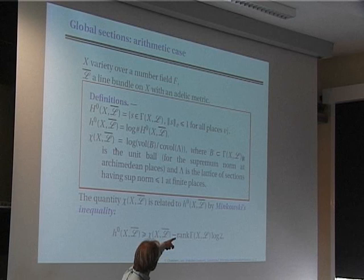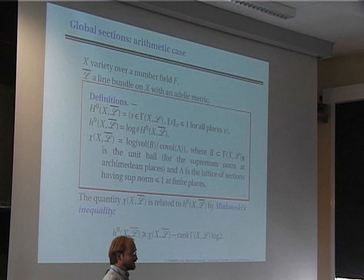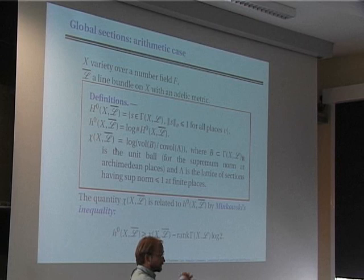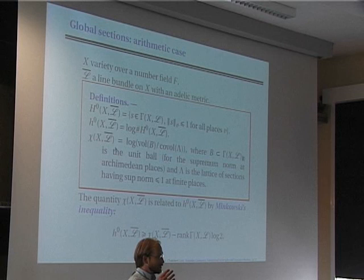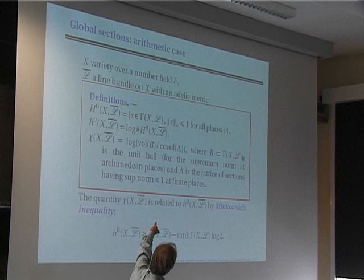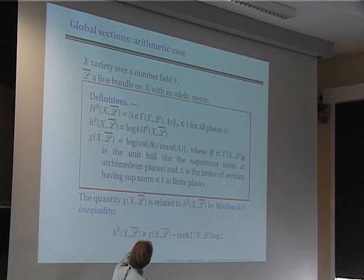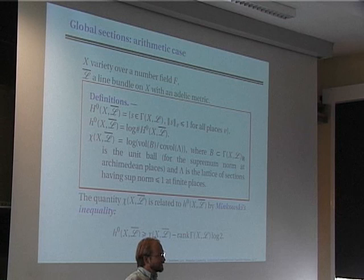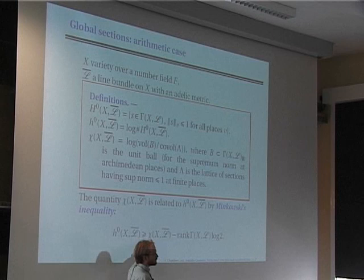Within this ℝ-vector space I have two objects of different nature. The first is the ball B at Archimedean places — the set of sections whose norms are smaller than one at all Archimedean places. The second is the lattice Λ — sections with sub-norms smaller than one at all finite places. The set I'm interested in is the intersection of these two: points of the lattice belonging to the given ball. Minkowski's theorem tells you this set is related to the logarithm of the volume of the ball divided by the co-volume of the lattice. So Minkowski's theorem gives h⁰ ≥ chi(X, L̄), up to an error term controlled by the dimension of the vector space.